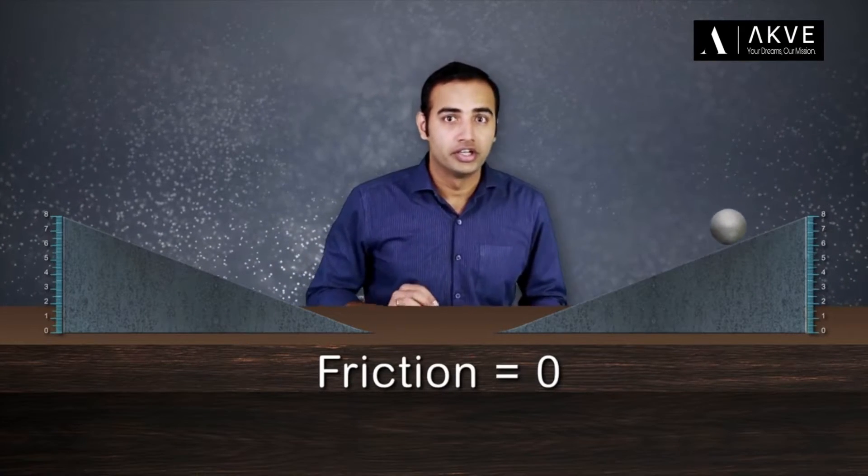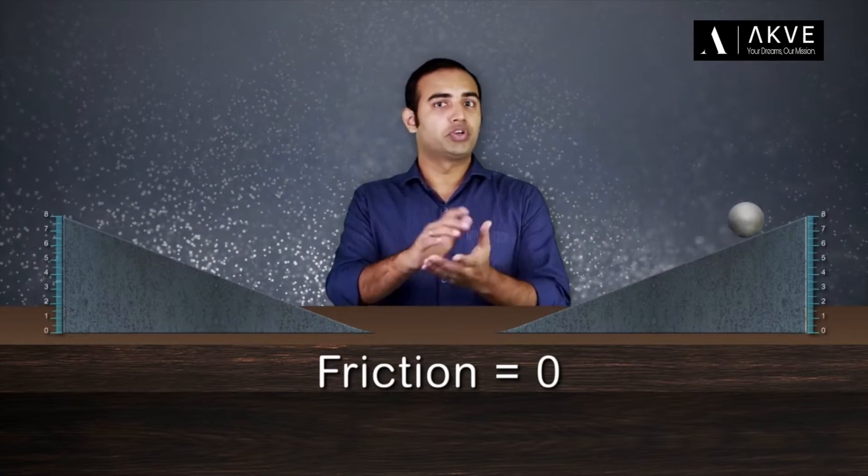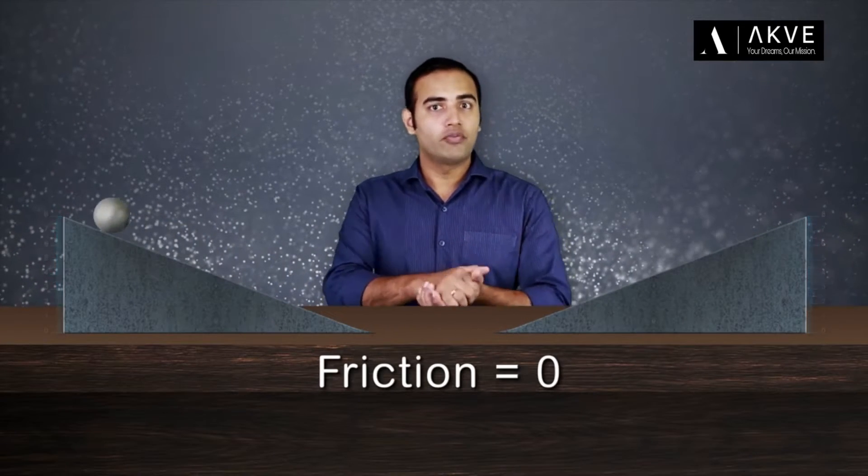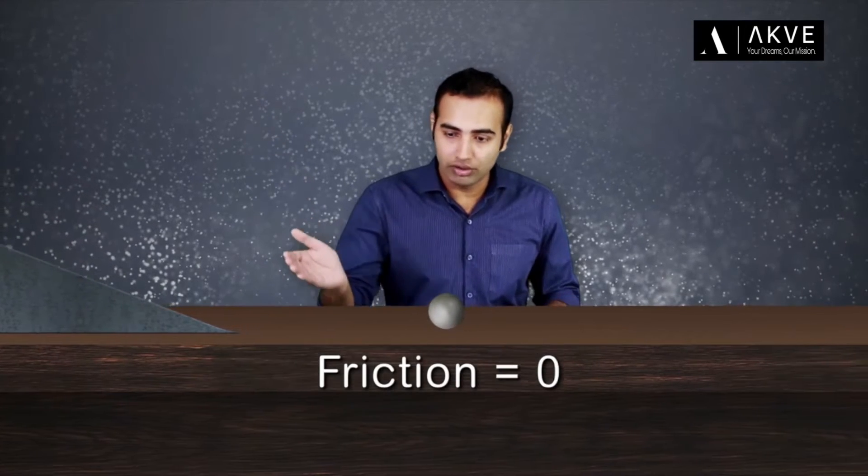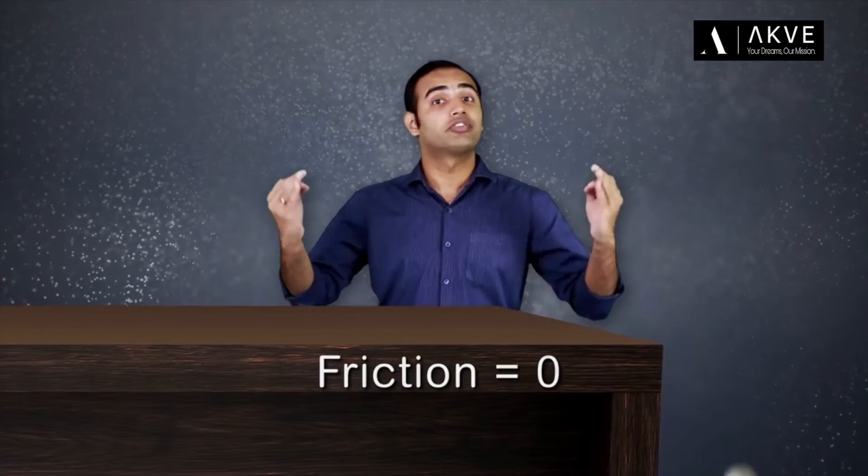Looking at this, Galileo wondered, what if I removed the second inclined plane from the scene entirely? What would happen to the motion of the ball? Obviously, once the ball comes down on the smooth table, it would continue to move uniformly at the same speed for indefinite period of time.